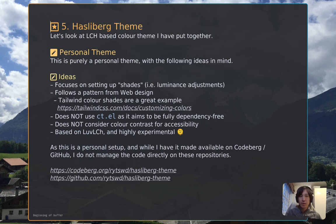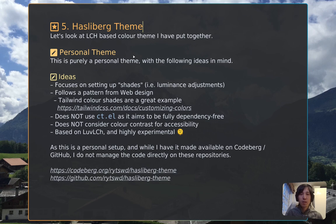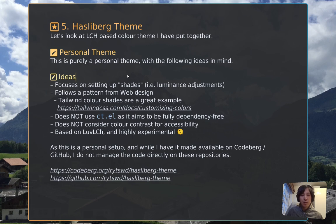With that, let's have a look at Hasselberg theme — a theme I created personally, named based on the Swiss Alps. It focuses on setting up shades: the top heading is a bright orange, and other headings are based on that orange with luminance adjustments applied. It follows a pattern from web design — Tailwind color shades are a great example. It does not use ct.el as it aims to be fully dependency-free and does not consider color contrast for accessibility, since it's personal. It's based on OKLCH rather than LAB-LCH and is highly experimental, but the code is available at Codeberg and GitHub.